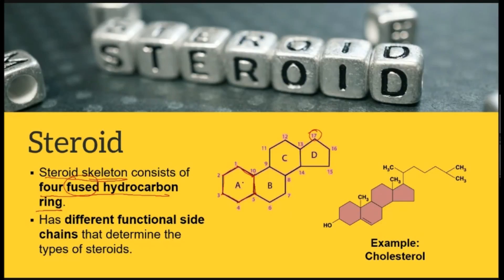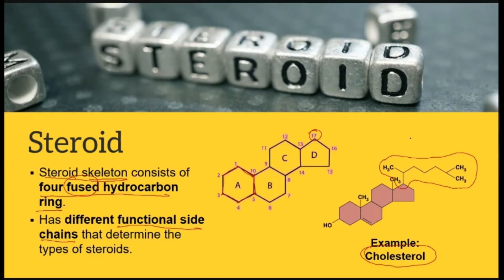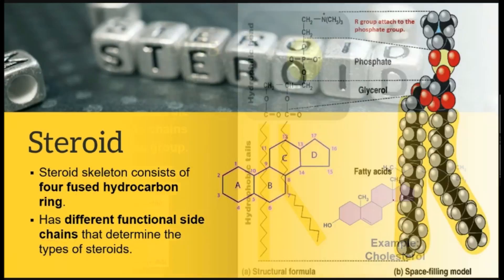For the general structure, one steroid molecule has a maximum of 17 carbons — setiap pucu pada gelang mewakili carbon, seperti yang kita belajar untuk alpha glucose dalam subtopic 1.2. Different steroid members are differentiated by their side chain. Cholesterol is an example of a steroid. In second year, you will study other steroids such as sex hormones — testosterone and progesterone — yang boleh meningkatkan performance seseorang dalam sukan.